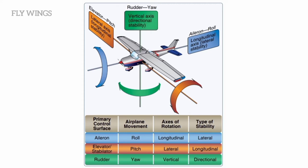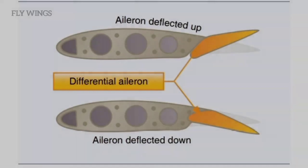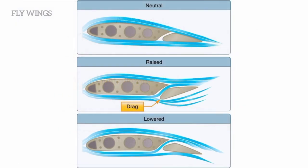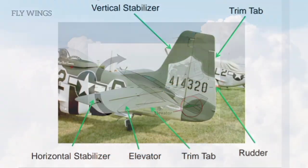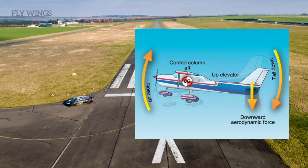Moving the control wheel or control stick to the right causes the right aileron to deflect upward and the left aileron to deflect downward. The upward deflection of the right aileron decreases the camber, resulting in decreased lift on the right wing, while the left wing gains increased lift. This difference causes the aircraft to roll to the right.